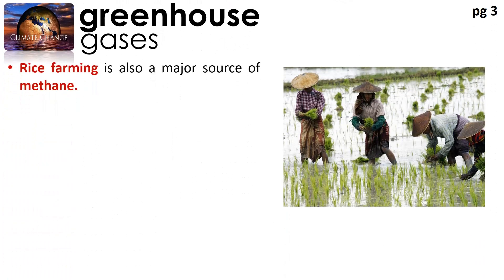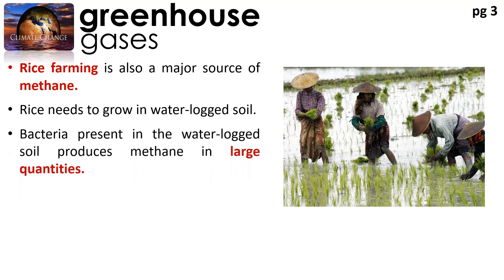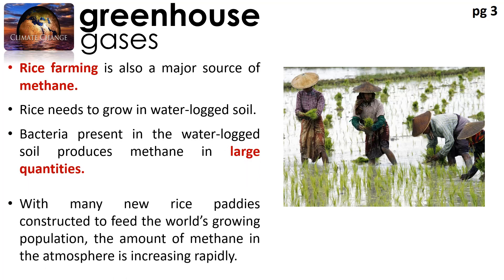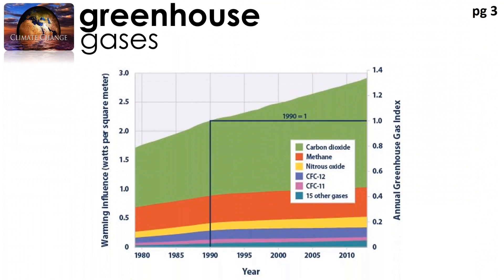Methane can also be produced by these two processes which you may not be so familiar with. Swamps and marshes, where fallen plants decay in the underwater mud, actually constitute one of the largest sources of natural methane. Large pockets of methane gas are actually trapped between layers of soil and rock, and that is called natural gas. Huge pockets of natural gas are actually found near the deposits of oil. Now rice farming is also a major source of methane. Why is that so? Because rice needs to grow in waterlogged soils, and bacteria present in these waterlogged soils produce methane in large quantities. There you go - again another human activity, rice farming. All of us love to eat rice. The number of rice paddies around the world is growing to feed our needs, and we are producing a lot of methane into the atmosphere. Figure 1.1b shows us different greenhouse gases and their warming influence over 30 years. You can see here that carbon dioxide is still the most major contributor to global warming, followed by methane, nitrous oxide, which is N2O, and CFCs, and 15 other gases play a very small role.